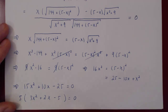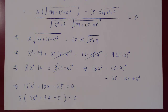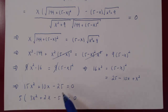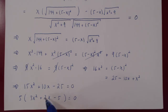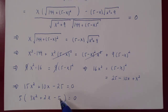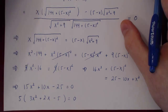Can we factor by inspection? Look at the coefficients: 3, 2, and −5. If x = 1: 3(1) + 2(1) − 5 = 0. So x = 1 is a root, meaning x − 1 is a factor. Dividing 3x² + 2x − 5 by (x − 1) by long division gives 3x + 5. So the full factorization is (x − 1)(3x + 5) = 0.